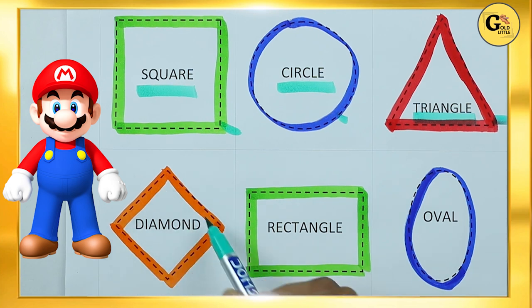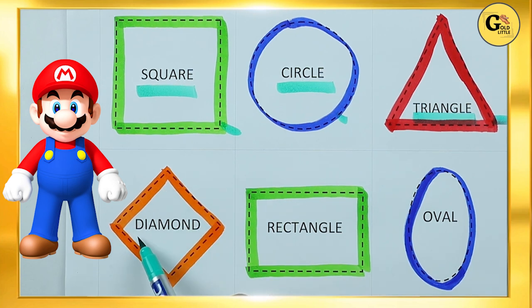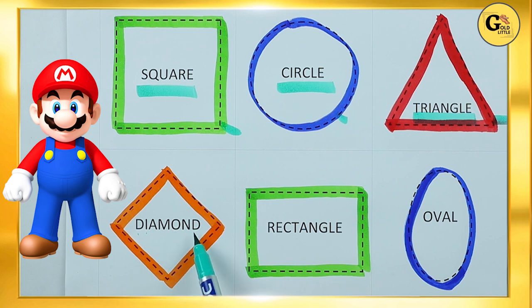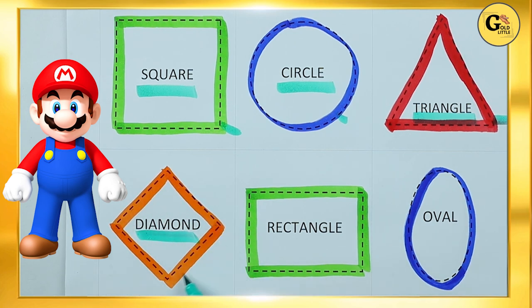Which shape is this? Diamond. D-I-A-M-O-N-D. It's a diamond with orange color.